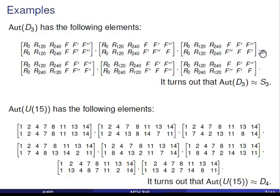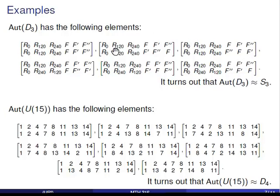We would take each element of D3 and trace what it gets mapped to as we apply one permutation and then the other. So for instance, if we composed these two automorphisms — the one on the top composed with the one on the bottom — we would take R120 and apply the later automorphism first, where R120 is mapped to R240, and then the other automorphism maps R240 to itself, so overall R120 ends up at R240. Now if we start with F, it gets mapped to F double prime, and then F double prime is mapped to F prime, so overall F ends up at F prime. Scanning through all these automorphisms, we see that this is the automorphism that sends R120 to R240 and F to F prime — so the composition of these two automorphisms is that automorphism.